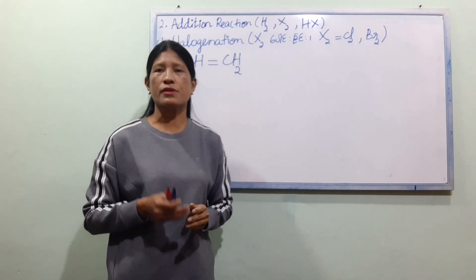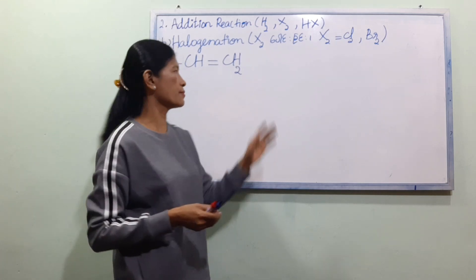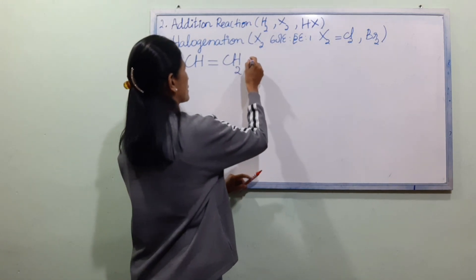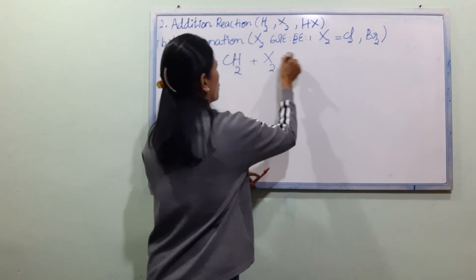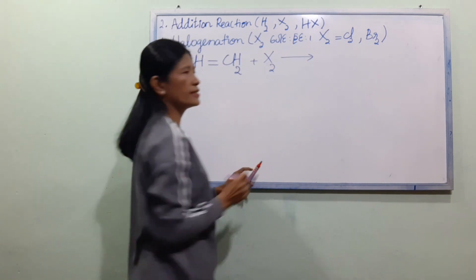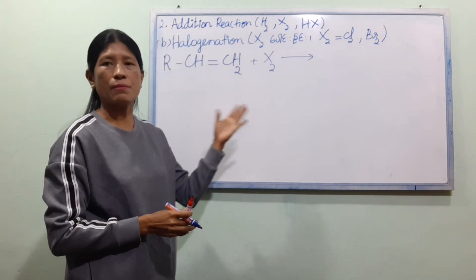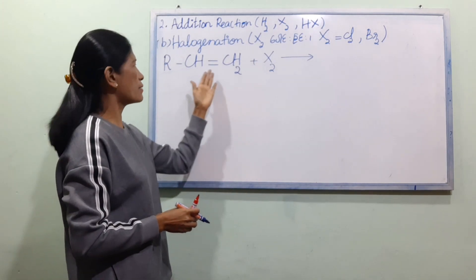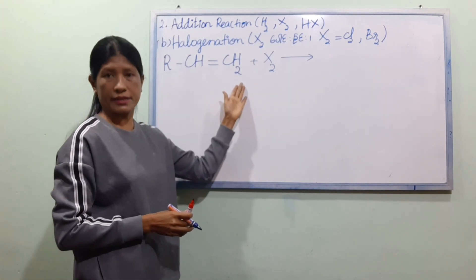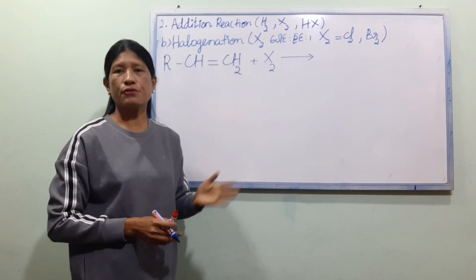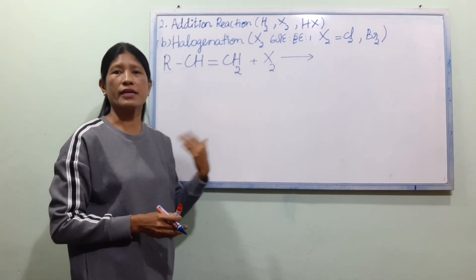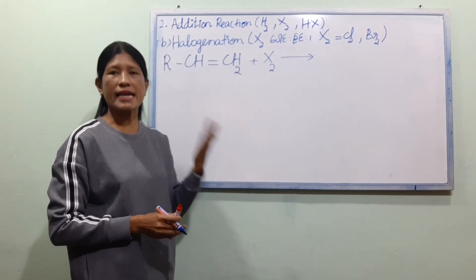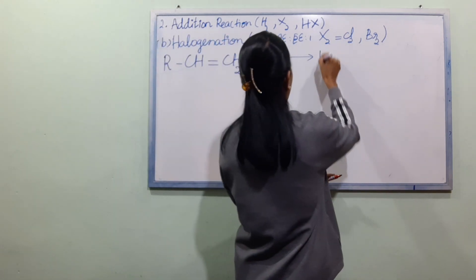So we have halogenation, which uses X2 — that is a single bond. We will find that hydrogenation uses X2 to form a single bond in X2.